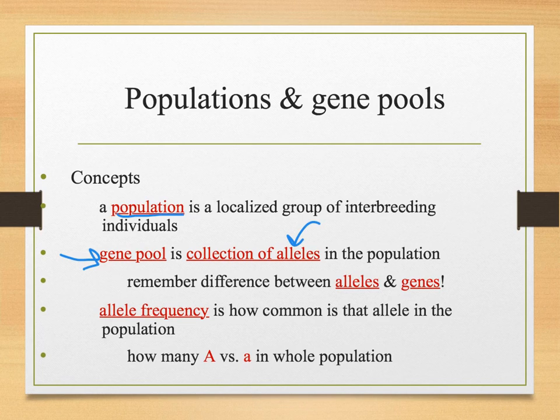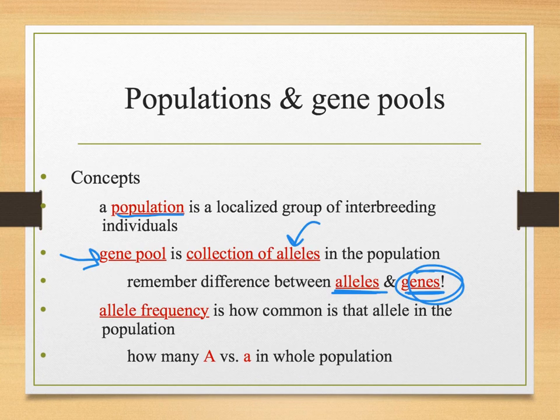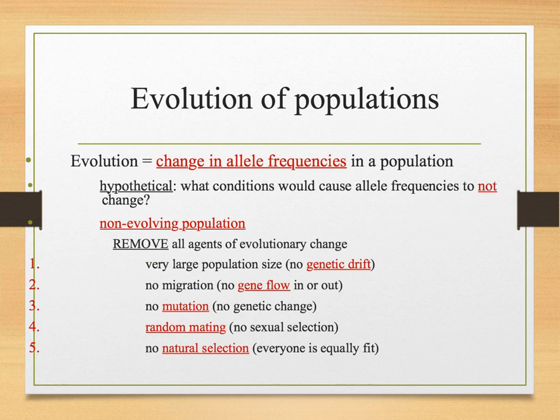Say the gene is for eye color — the allele would be a blue eye color gene or a brown eye color gene. The gene is the trait — it's eye color. The allele is your options: blue or brown. And then we have allele frequency — just how common that allele is in that population. Evolution is a change in allele frequencies, a change in the genes that are expressed.